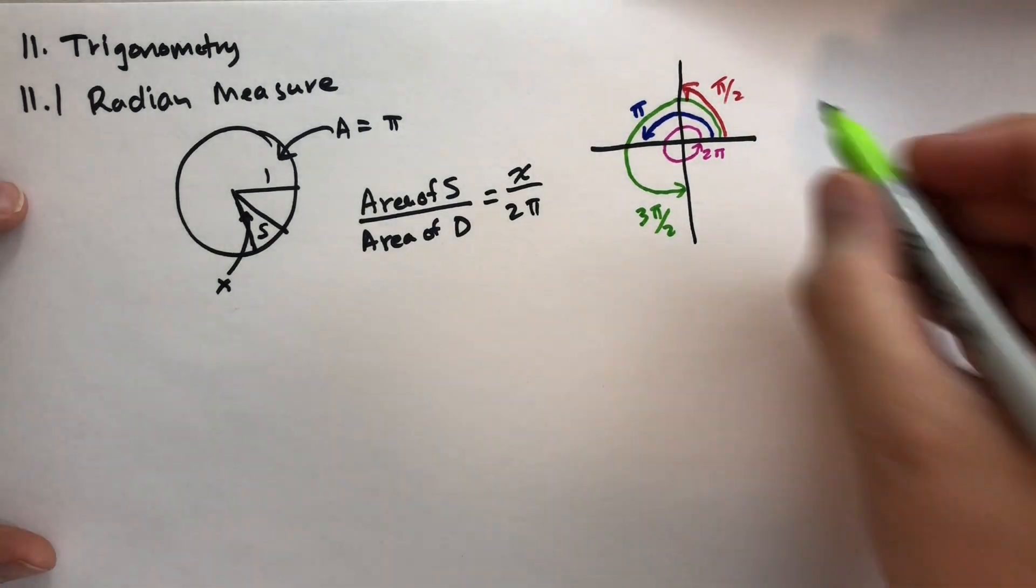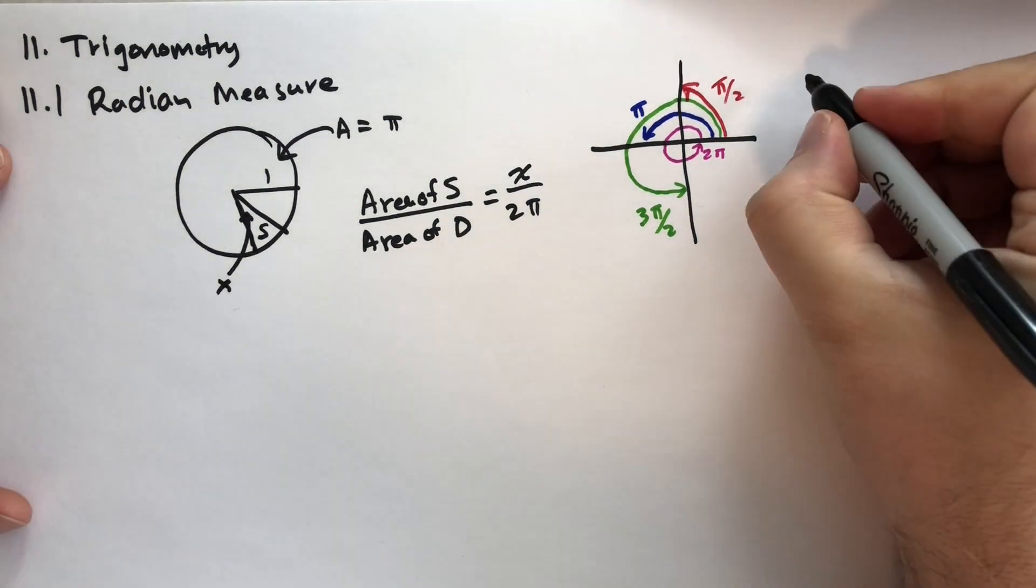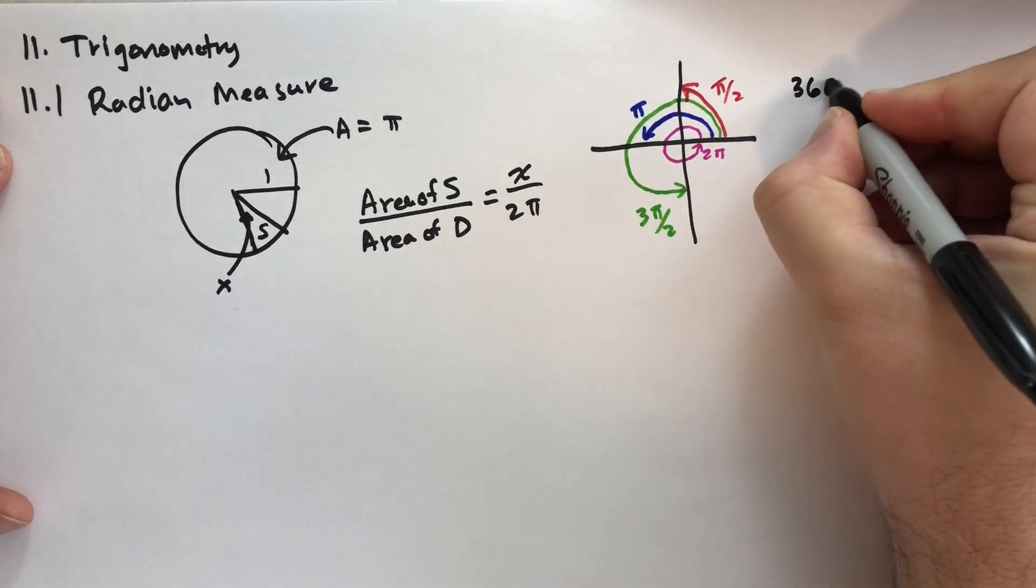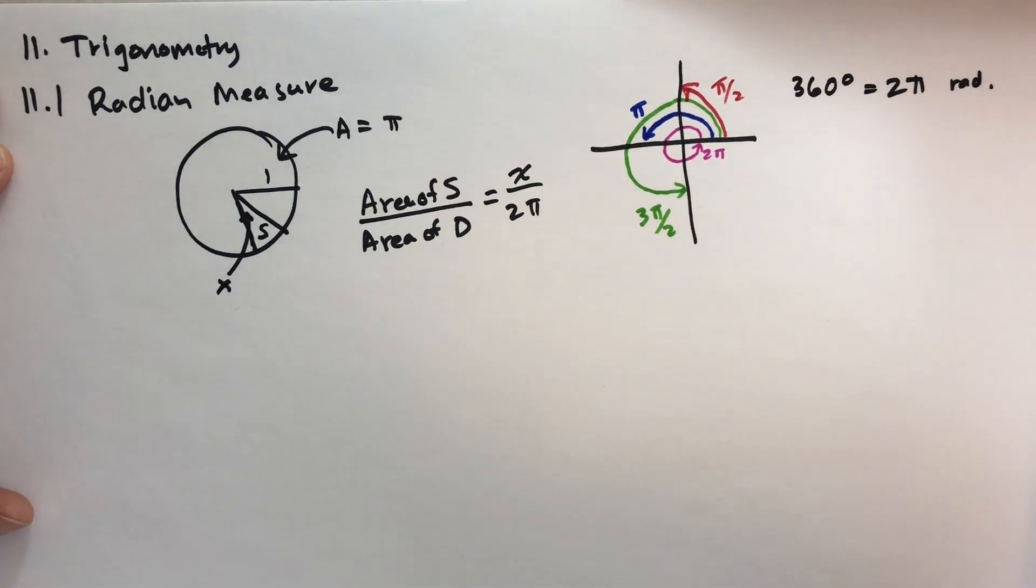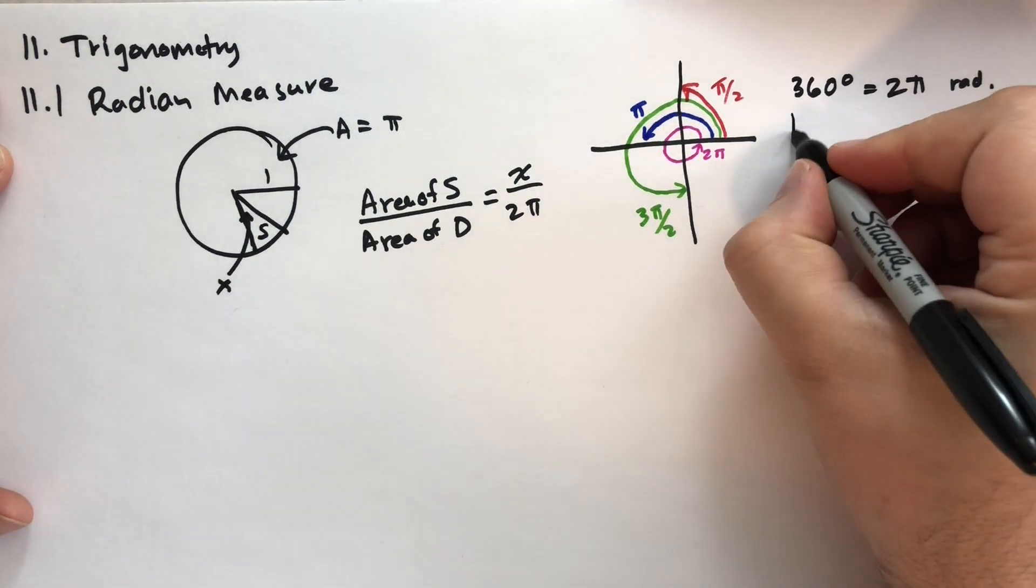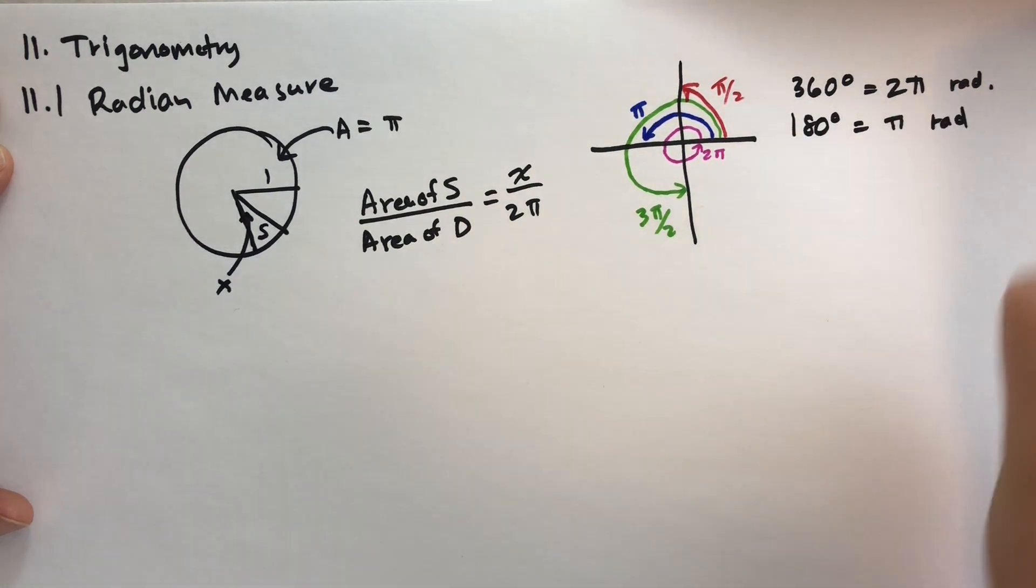And so we can do some quick calculations on the side here, equating degrees to radians. So we have 360 degrees is 2 pi radians. I'll just put rad, 180 degrees, which is a half circle, is pi radians, okay?